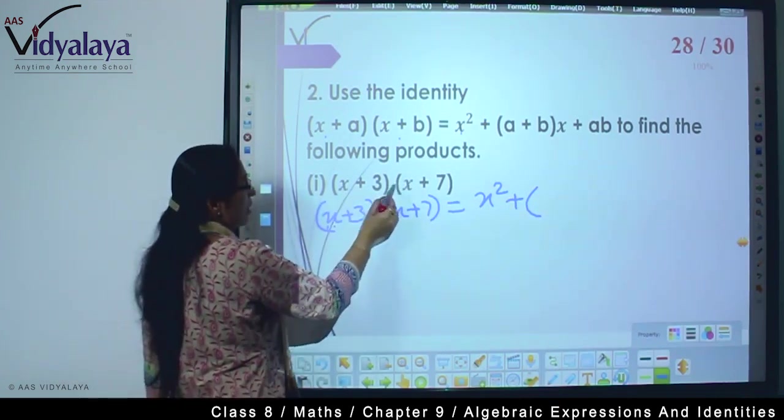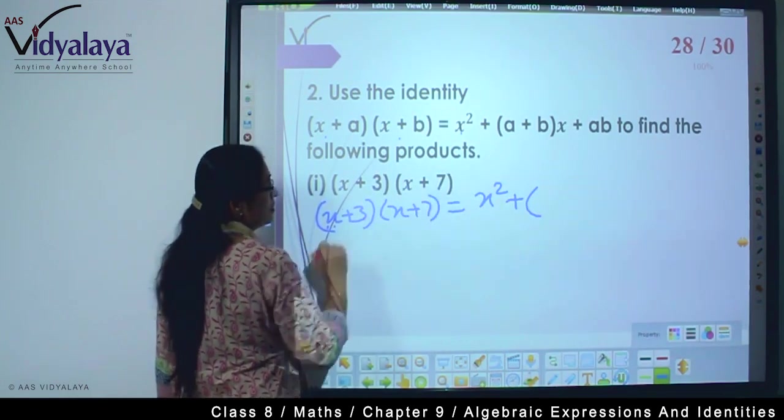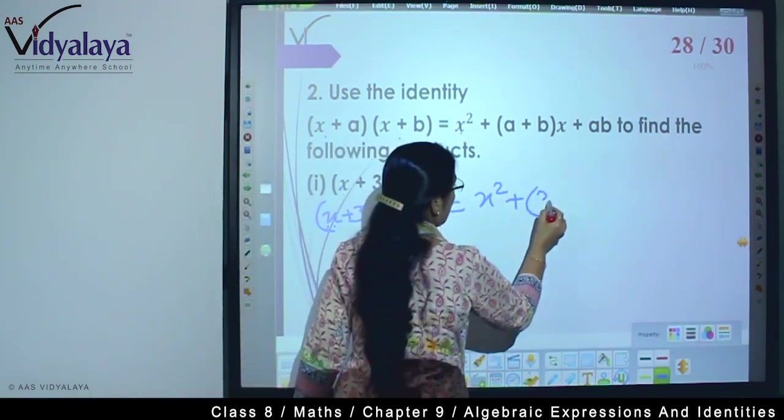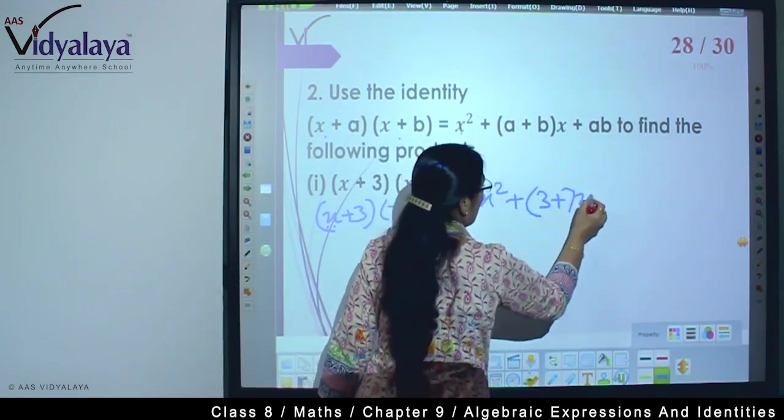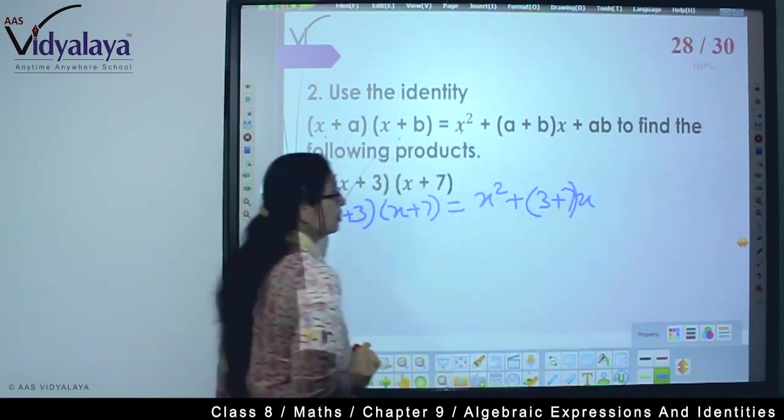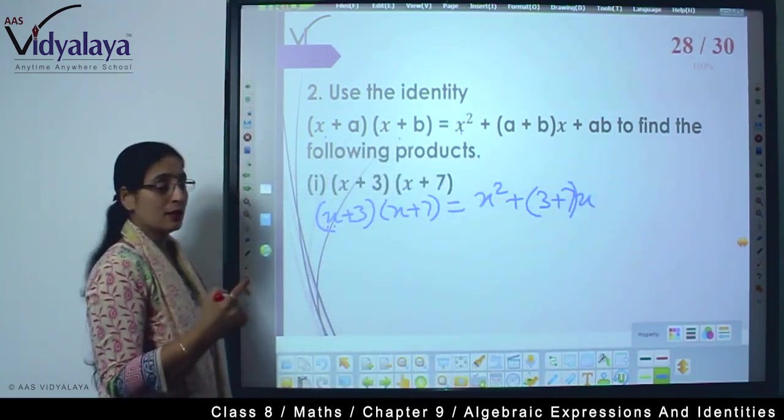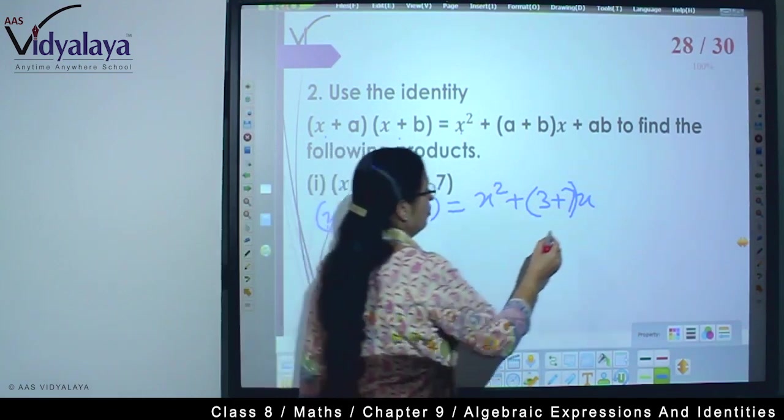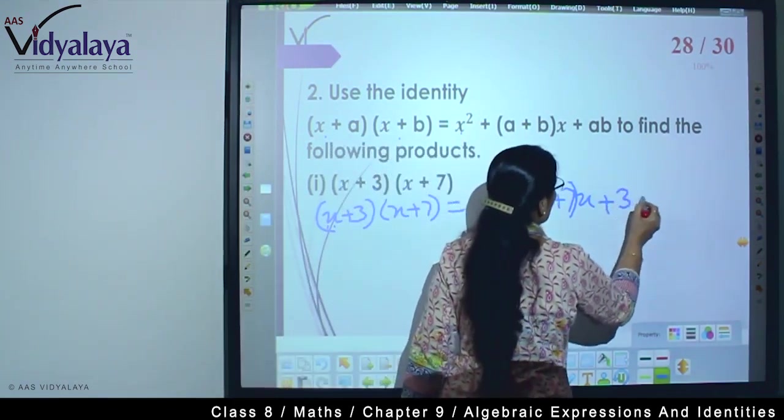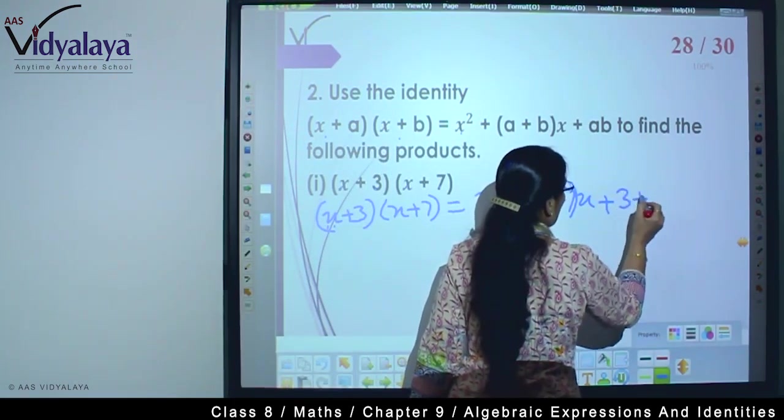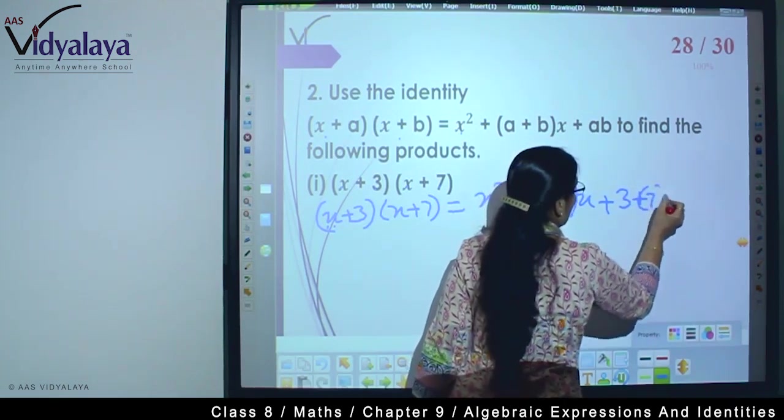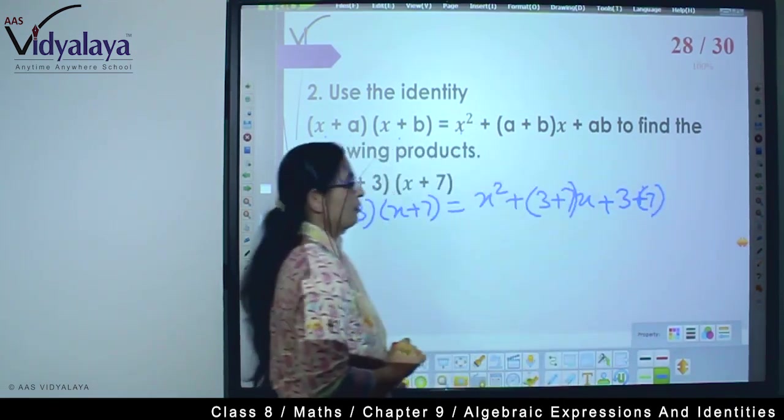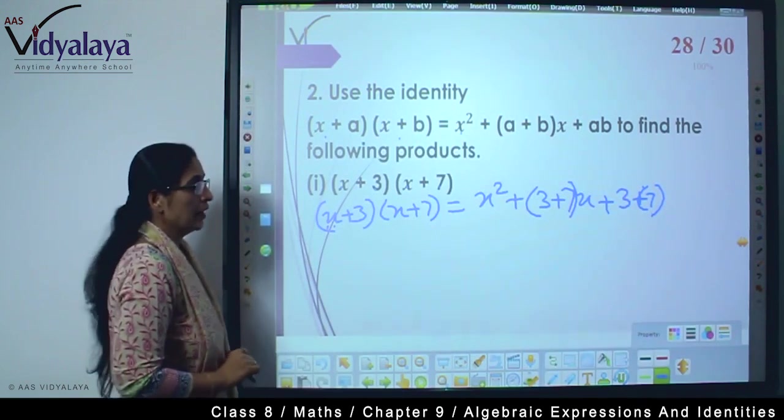So a+b - what is ours? This is x, this is a, and this is b. So it means 3+7, so 3+7 in bracket times x, plus ab means plus 3 multiplied by 7.